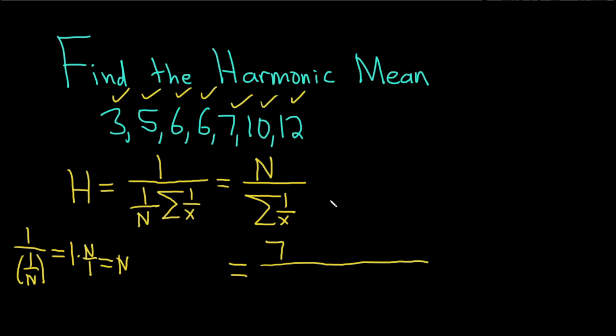And then on the bottom, we're going to have a lot of numbers. We basically flip all of these. So all of these numbers are really over 1, so when we find the reciprocal, we simply flip them. So it's 1 over 3 plus 1 over 5 plus 1 over 6 plus 1 over 6 plus 1 over 7 plus 1 over 10 plus 1 over 12.